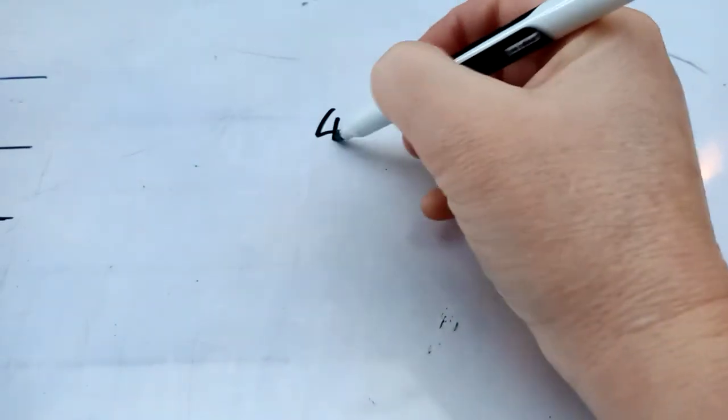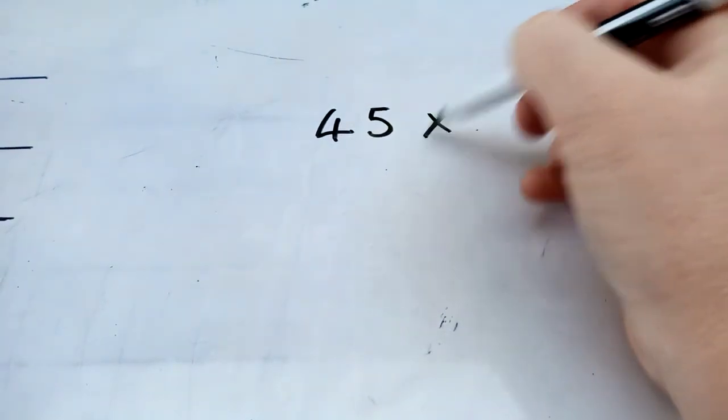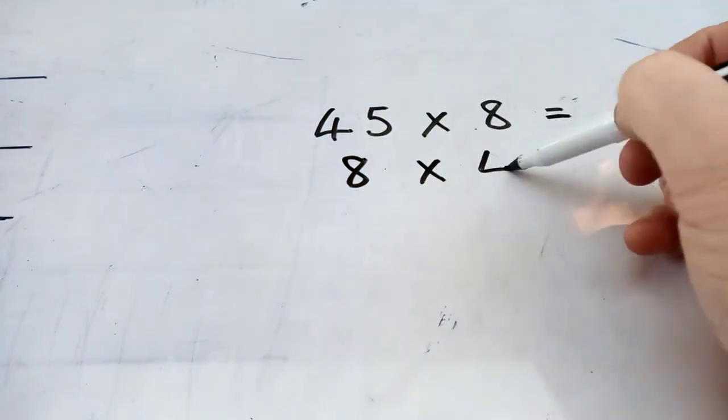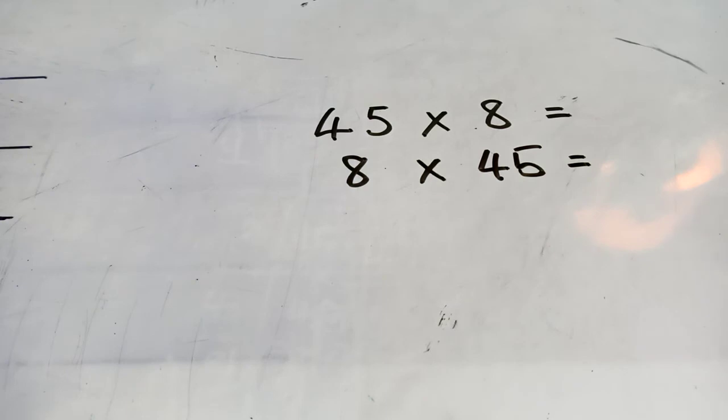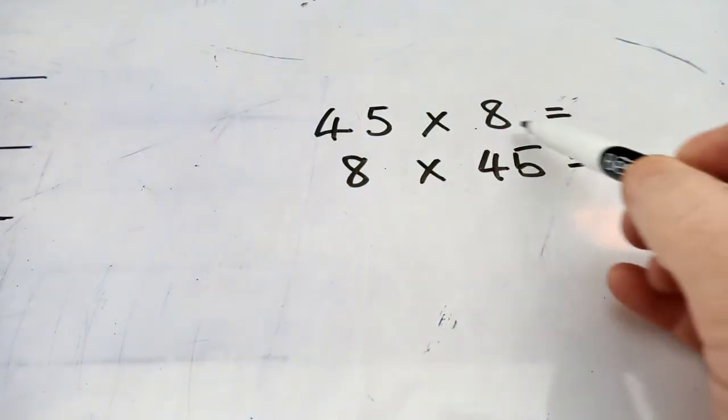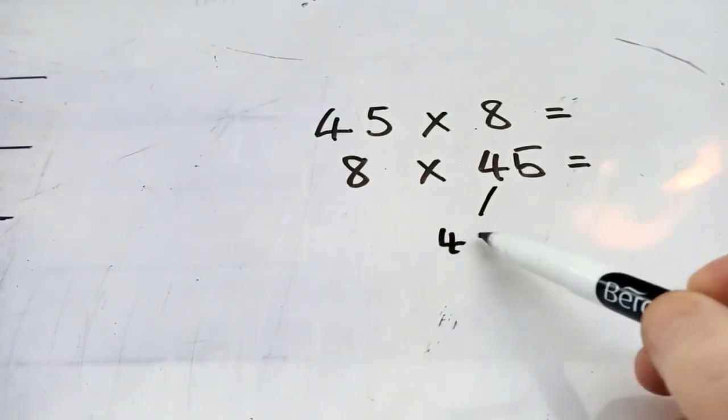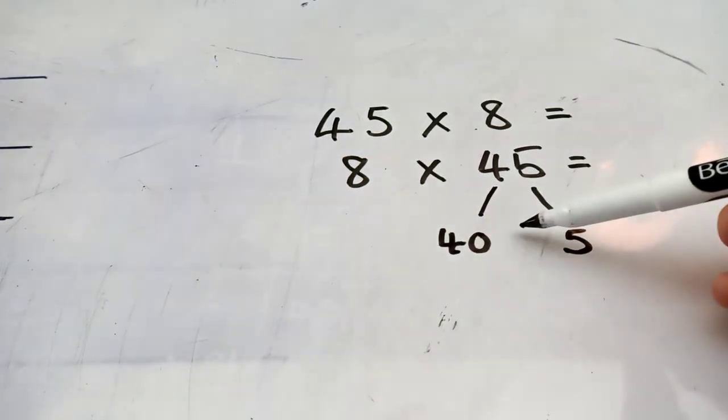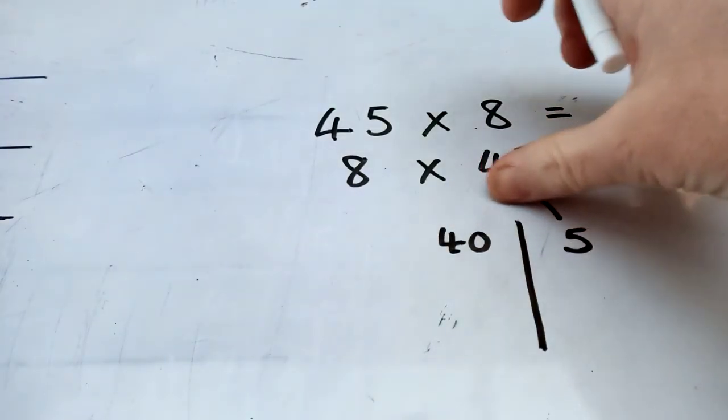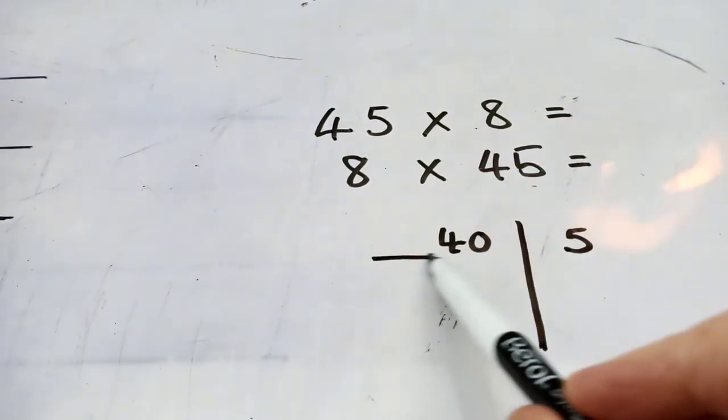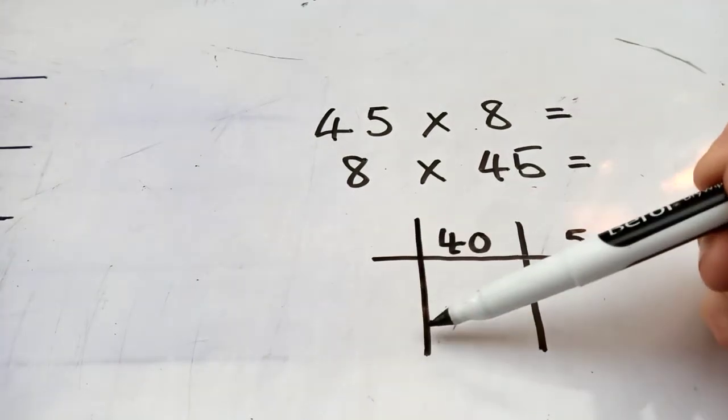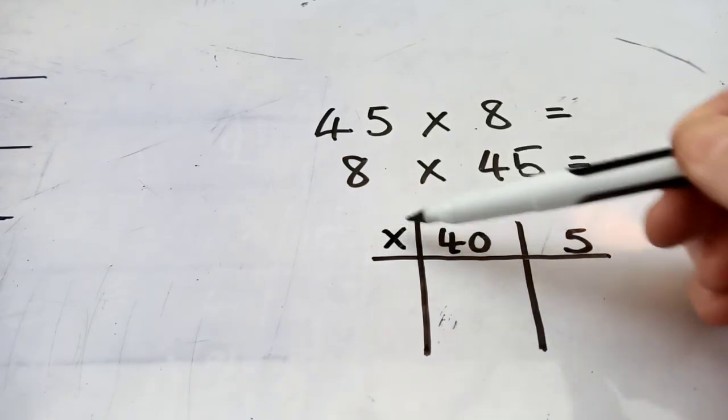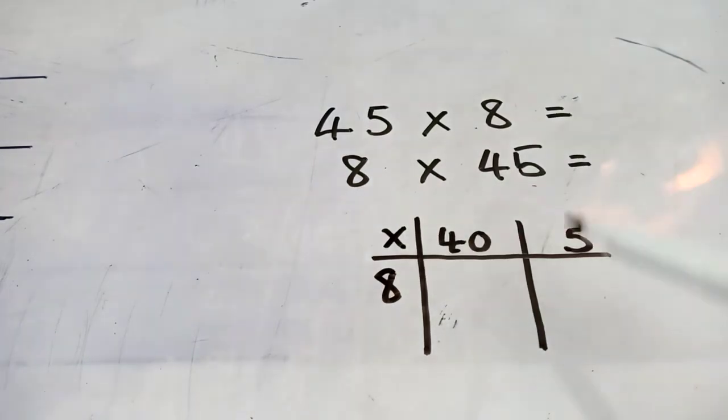This time, I'm going to go for something a bit meatier. 45 times by 8 equals. Or I could do 8 times by 45. Doesn't matter. I take my 2 digit number and I partition it into a 40 and a 5. Right? And that becomes my grid. What am I timesing it by? I'm timesing my 45 by 8. I put my times there and my 8 there. And here I go, I'm ready.